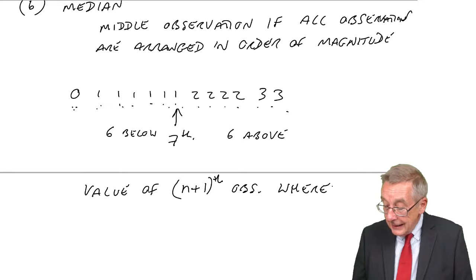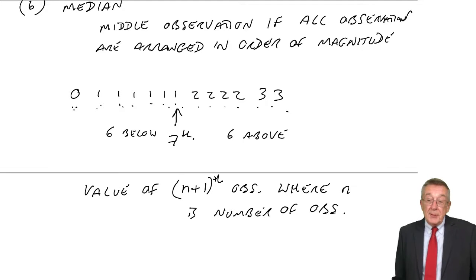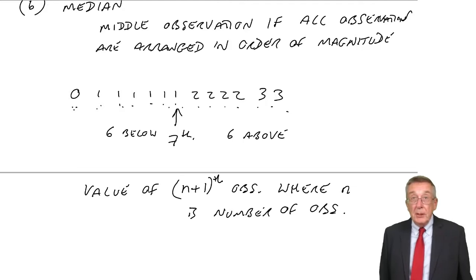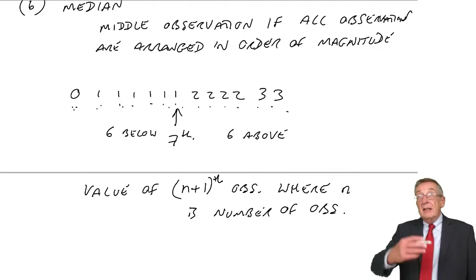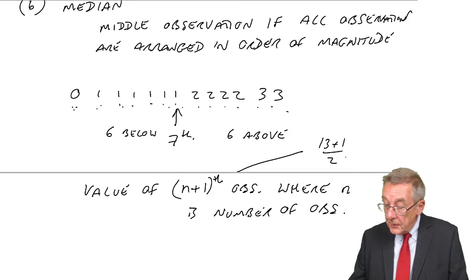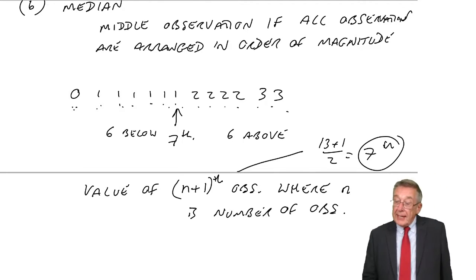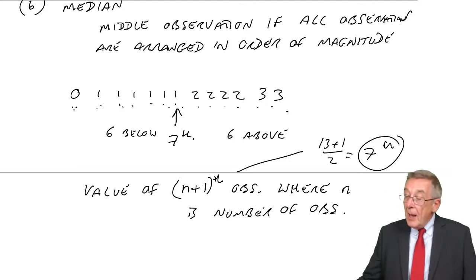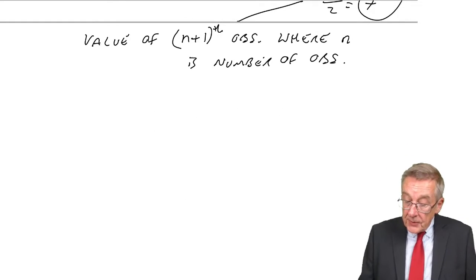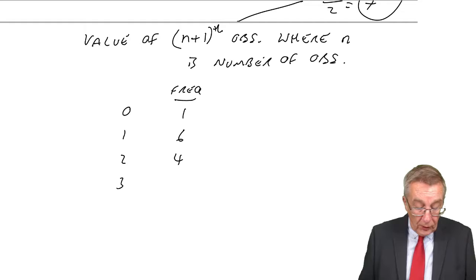So, instead of writing them down — it didn't take many minutes for 13, but imagine if there were 113. Well, there are 13 observations, so in our case, 13 plus 1 over 2 — we want the value of the 7th. How can we get the value of the 7th? Since the number of complaints was 0, 1, 2, 3 and the frequency was 1, 6, 4, 2, if we look at the cumulative frequency: 1 was 0; how many were 0 or 1? 7; how many were 0, 1, or 2? 11; how many were 0, 1, 2, or 3? 13.